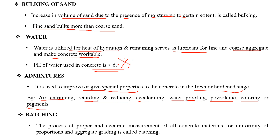The next term is batching. Batching is the process of proper and accurate measurement of all concrete materials for uniformity of proportion and aggregate grading. We use correct proportions of ingredients like cement, water, coarse aggregate, and fine aggregate — this process is called batching.